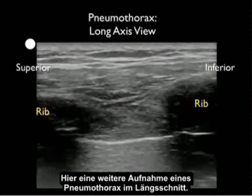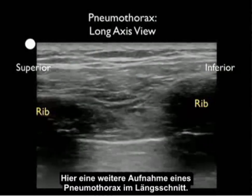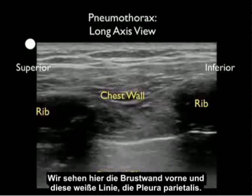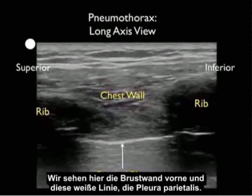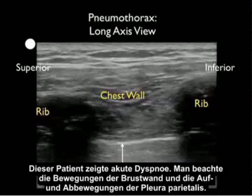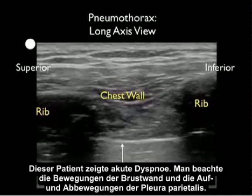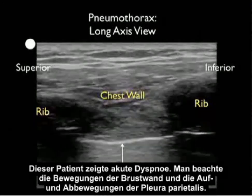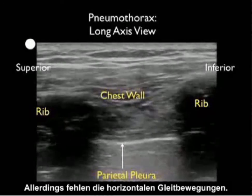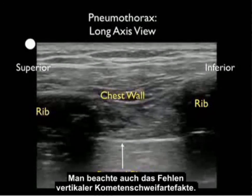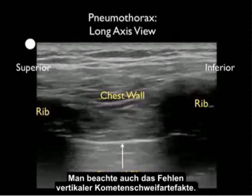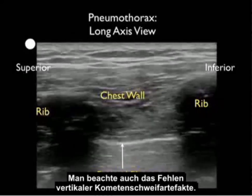Here's another image of a pneumothorax in a long axis configuration. We see the chest wall anteriorly and the single white line which is the parietal pleura. This patient was acutely dyspneic, so notice that there is some motion of the chest wall and that the parietal pleura moves up and down, but notice the failure of horizontal sliding. Notice also the absence of any vertical comet tails coming off the back of the pleura.